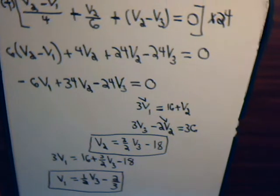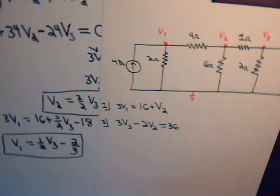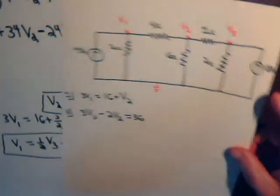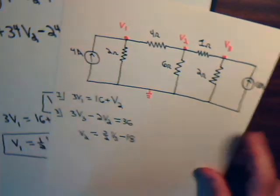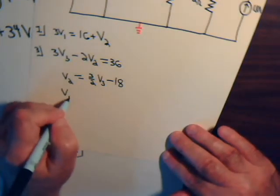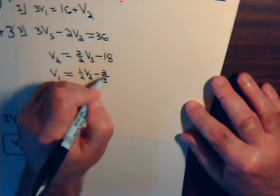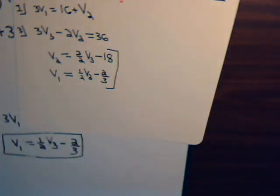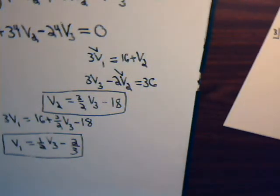So let's write these two equations onto here, because we're going to need them. So we have V2 equals 3 halves V3 minus 18, and V1 equals 1 half V3 minus 2 thirds. And these we are going to put into this equation right here. So let's make some room.